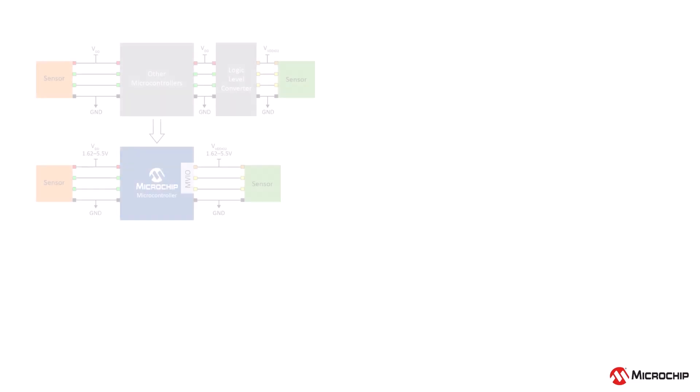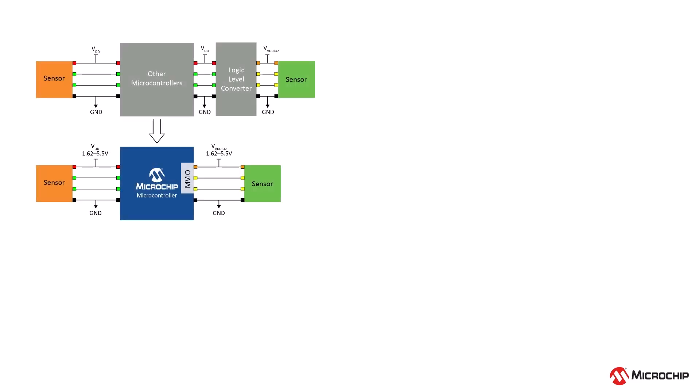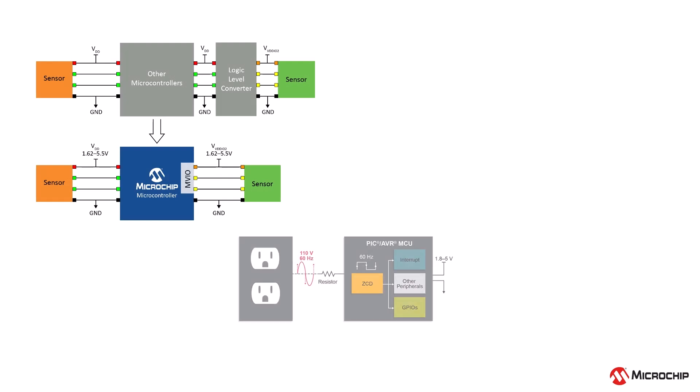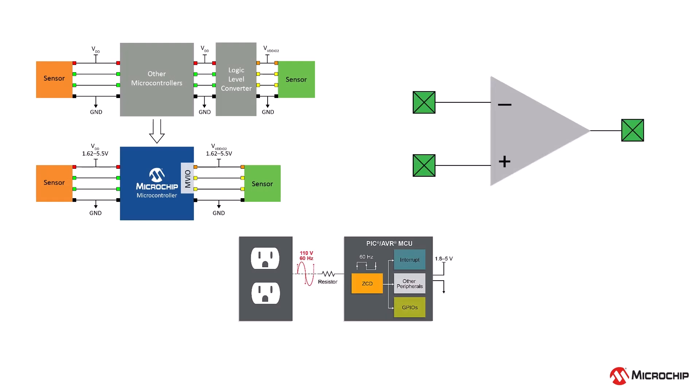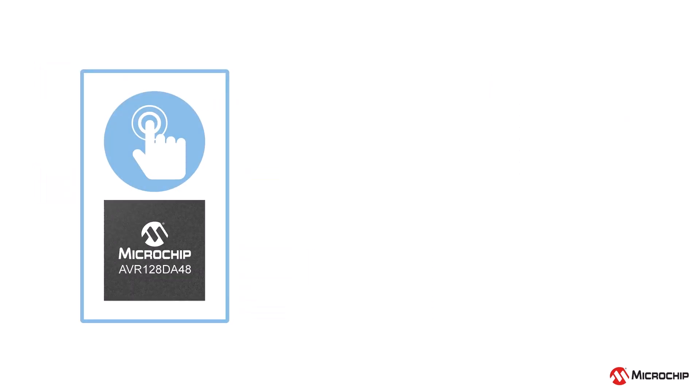Speaking of peripherals, the AVR D and E families come enhanced with new core independent peripherals and improvements. To name a few, certain devices now offer built-in level shifting courtesy of the MVIO, a zero cross detect, integrated op-amps, and for more specific use cases, the latest generation of the peripheral touch controller, or PTC.